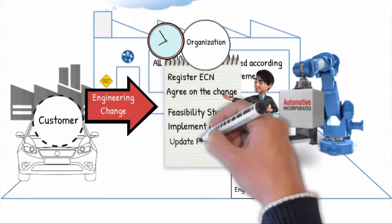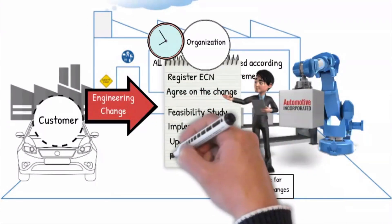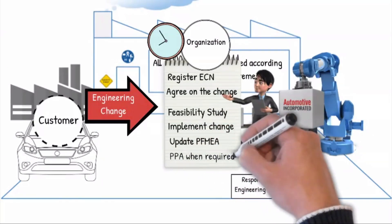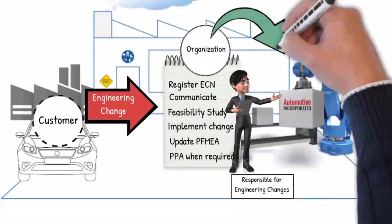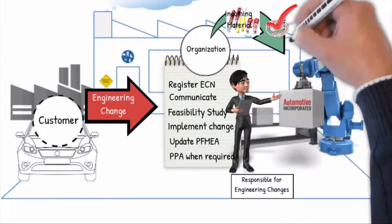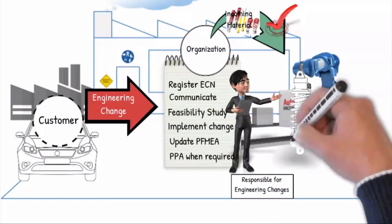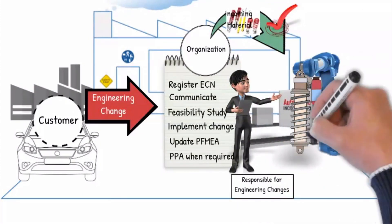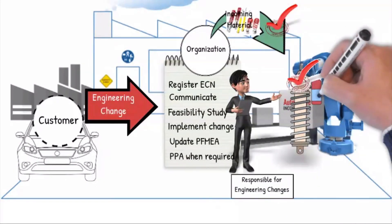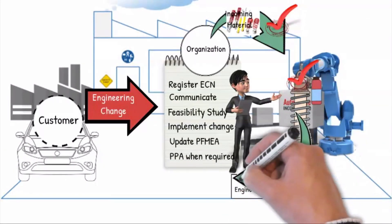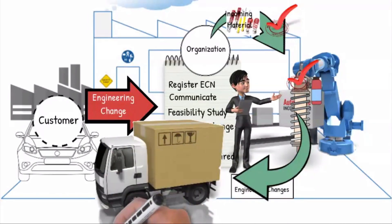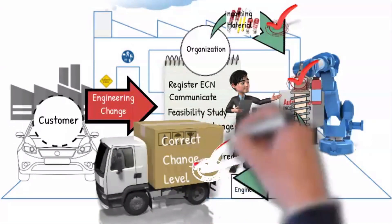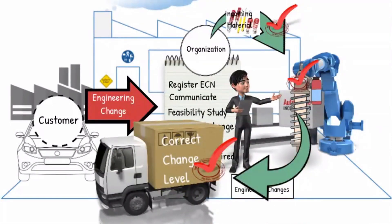A new PPA must be carried out depending on the nature and size of the change. It must be ensured that at all times the correct design level of the incoming materials or software is used, and the correct design level of the finished product is manufactured and shipped to the customer. Documentation of change status must be fully traceable.